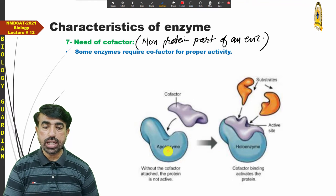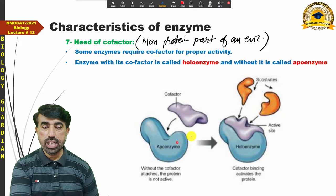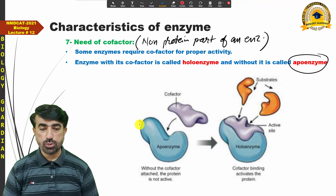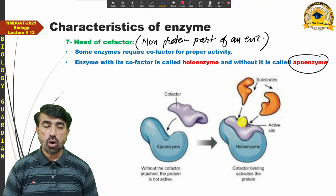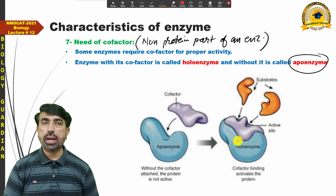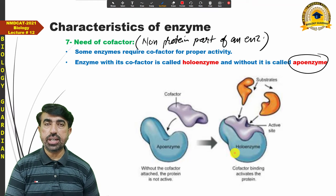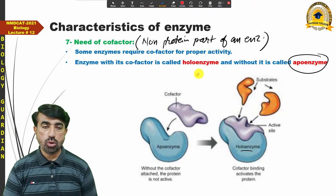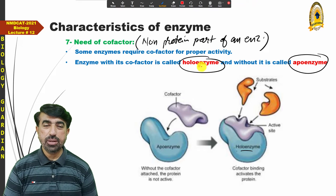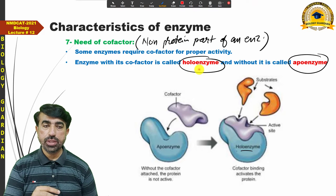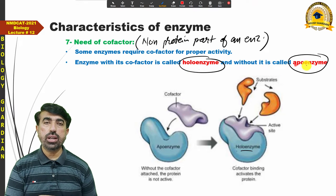The term used for an inactive enzyme (without its co-factor) is apoenzyme. When the co-factor is added and the enzyme becomes active, it is called a holoenzyme. Enzyme with its co-factor is called holoenzyme; enzyme without its co-factor is called apoenzyme.